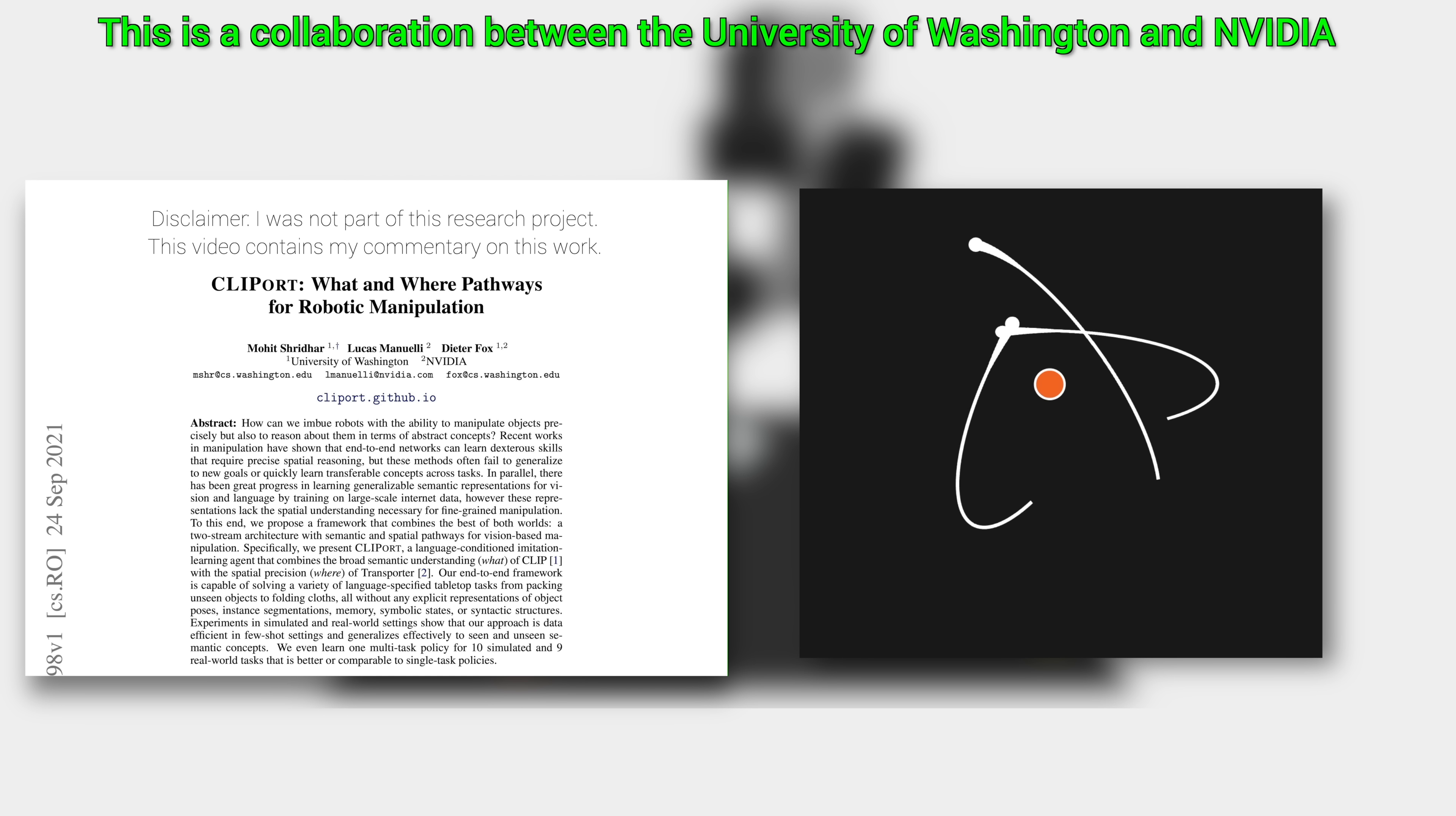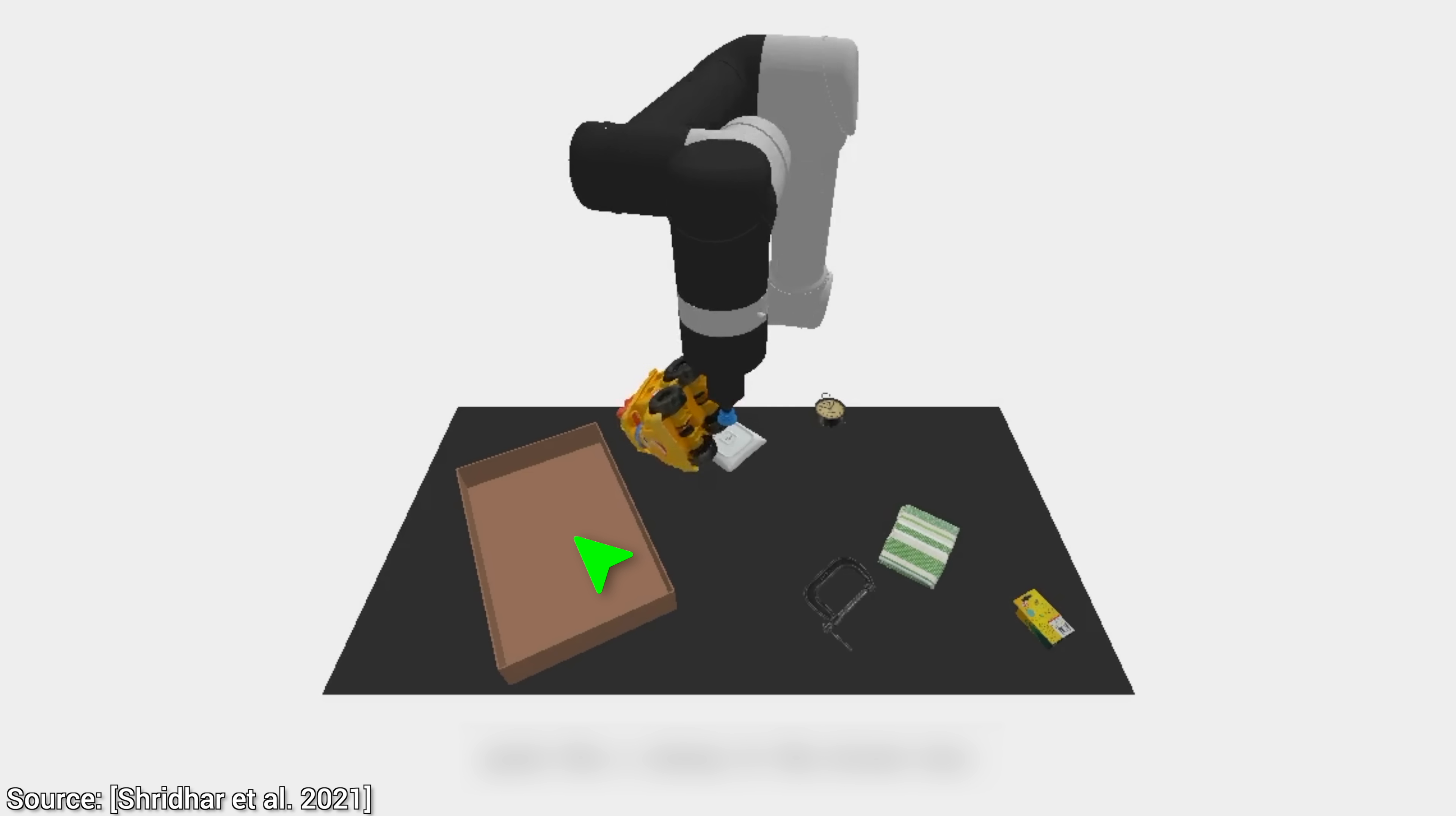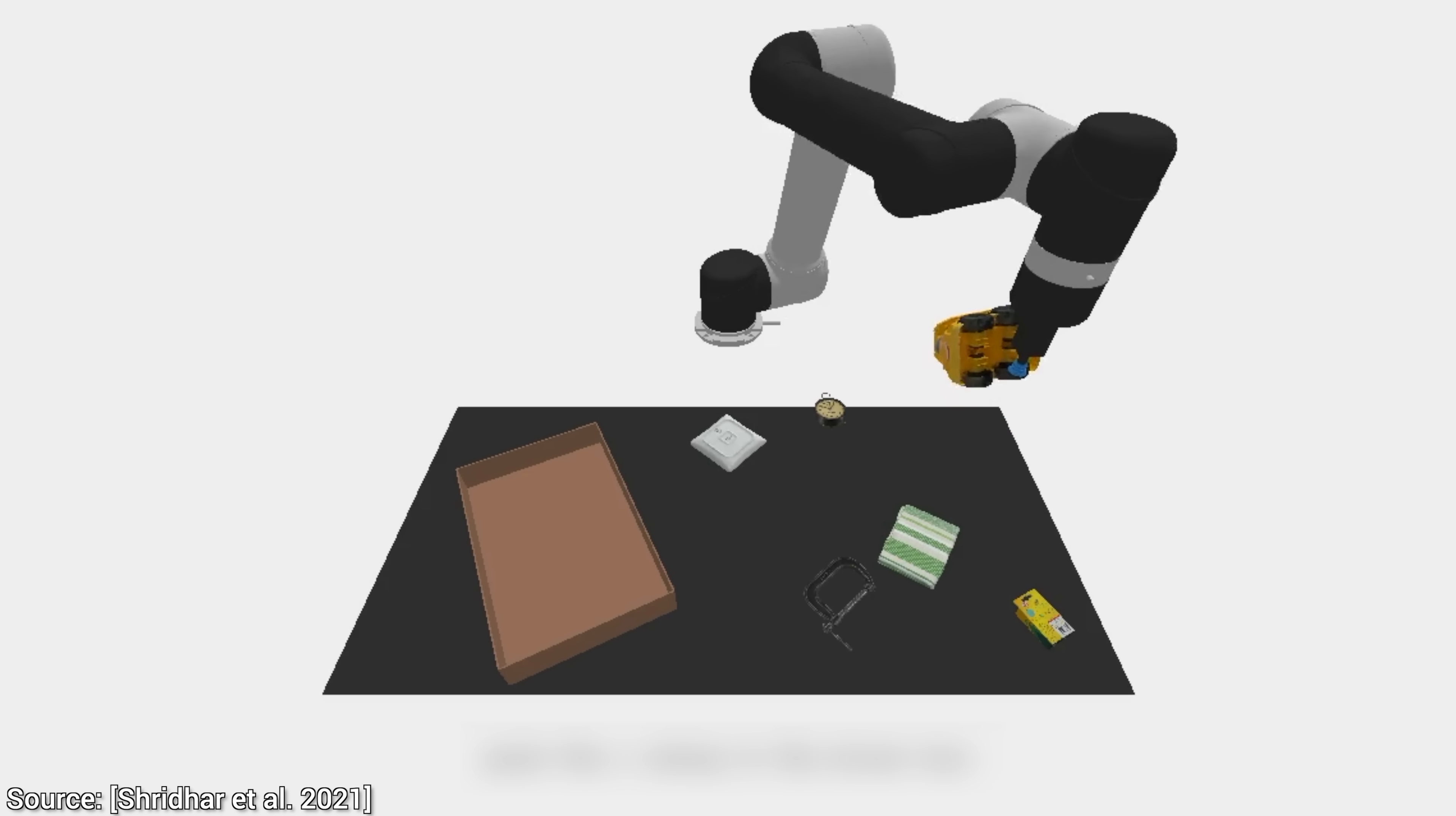Dear Fellow Scholars, this is Two Minute Papers with Dr. Károly Zsolnai-Fehér. Scientists at Nvidia knocked it out of the park with this one. Look, they are training an AI that moves this virtual robot arm to finish everyday tasks on this table.